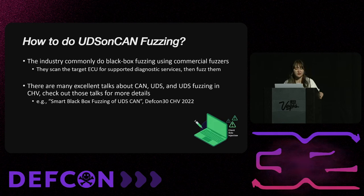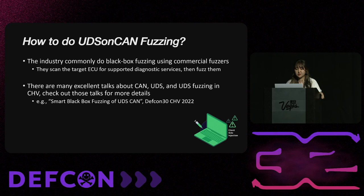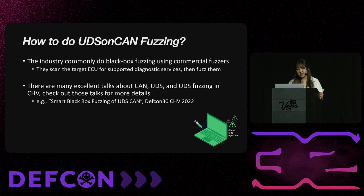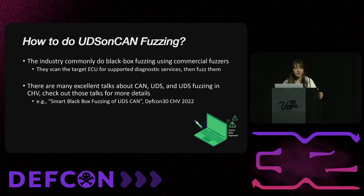To ensure that UDS is well protected, many car companies do fuzzing tests. Fuzzing is a testing method where random or unusual data is fed into a system to find problems. The goal is to see how the system behaves under stress and to find security issues. In the vehicle industry, we commonly do black box fuzzing using commercial fuzzers. There are many talks about CAN, UDS, and UDS fuzzing at CHV — check those out for more details.